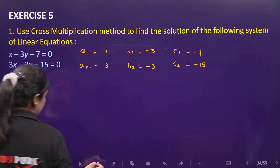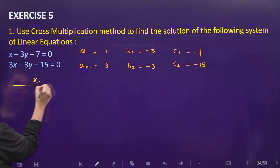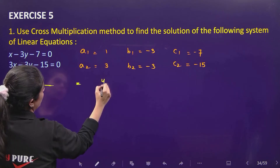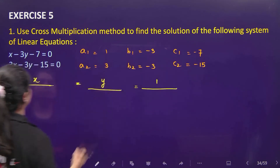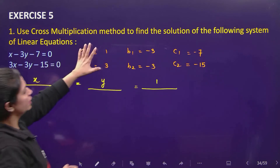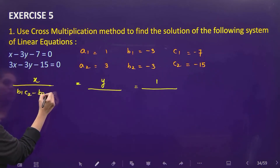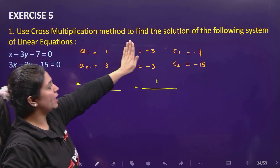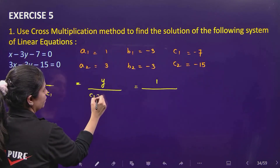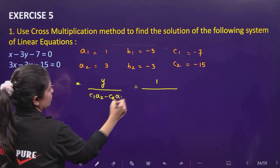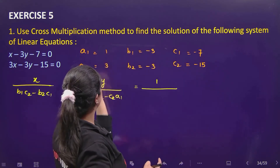c2 is minus 15. Now we define x, y and 1 and their denominators. x equals b1c2 minus b2c1, y's numerator corresponds to c1a2 minus c2a1, and the denominator for 1 comes after removing the constant terms as a1b2 minus a2b1.